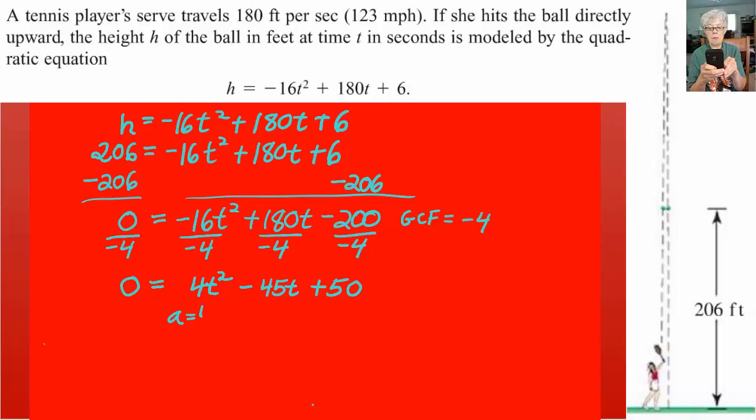Now we're going to use the quadratic formula. Our A will be 4, our B will be negative 45, our C will be 50.